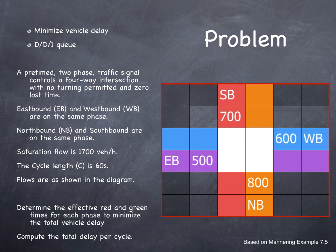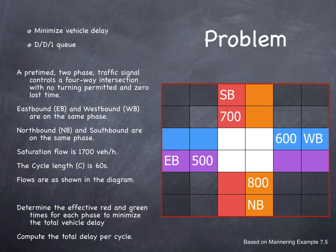In this problem, we have a pre-timed two-phase traffic signal which controls a four-way intersection with no turning permitted and zero loss time. The eastbound and westbound movements are on the same phase; similarly, the northbound and southbound movements are on the same phase. Saturation flow is 1,700 vehicles per hour. The cycle length is 60 seconds. Flows are as shown in the diagram: eastbound is 500, westbound is 600, southbound is 700, and northbound is 800 — all in vehicles per hour. Determine the effective red and green times for each phase to minimize total vehicle delay and compute the total delay per cycle.